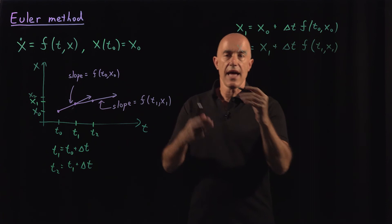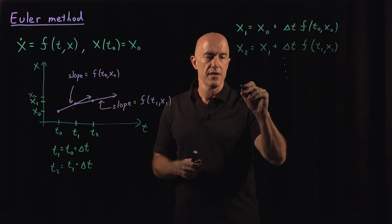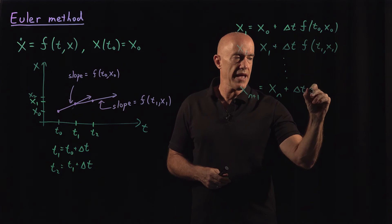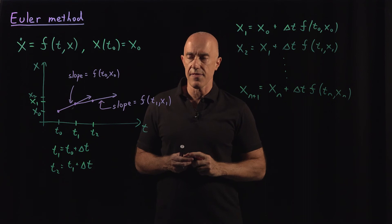And then we keep going. So the general formula for Euler's method would be x at the n plus 1 time step is equal to x at the n time step plus delta t times f of t sub n, x sub n. That's Euler's method.